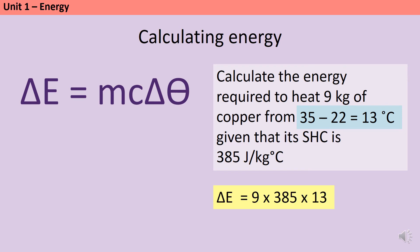If I wasn't sure which term any of those numbers belong to, I could use the units to help me — for instance, kilograms is always going to refer to mass. If I multiply all of those together, I get an energy change of 45,045. And because this is energy, the units will be joules.